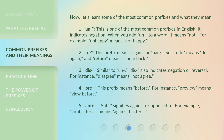3. Dis — similar to 'un', 'dis' also indicates negation or reversal. For instance, 'disagree' means 'not agree'. 4. Pre — this prefix means 'before'. For instance, 'preview' means 'view before'.